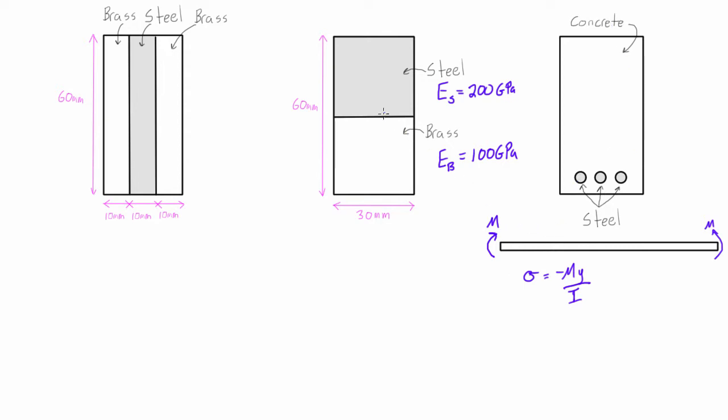We need to transform one of these sections with a different modulus of elasticity so that we basically convert it to having the same modulus of elasticity as the other section, which will virtually adjust the area of it. And then we can solve using our familiar expressions from the last videos, and then we have to do one last adjustment if we're searching for stress.